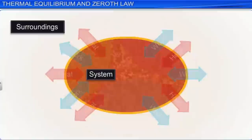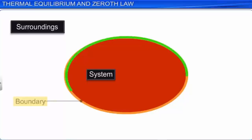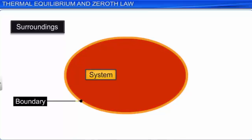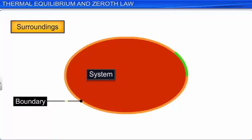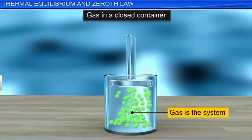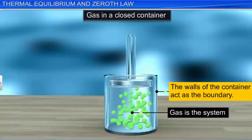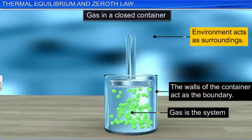A thermodynamic system is an isolated body or a group of bodies with a well-defined boundary. It is important to identify the system, its surroundings, and the boundary that separates both of them. For example, gas in a closed container is the system, the walls of the container act as the boundary, and the environment acts as the surroundings.